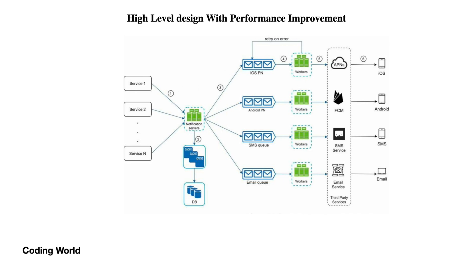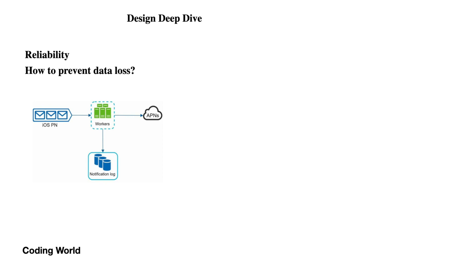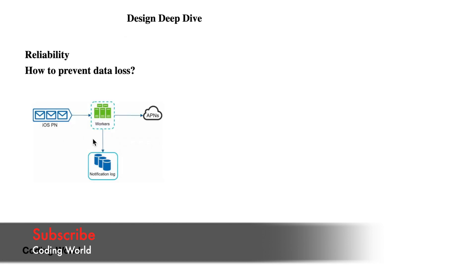The message structure placed into the queue is a simple JSON with fields like 'to', 'from', 'subject', and 'content'. The worker pulls this from the queue and sends it to APNS or FCM. To prevent data loss and achieve reliability, if a worker fails to send a message it is put back into the queue. We can also maintain notification logs to track which messages failed, why they failed, and when they were retried.